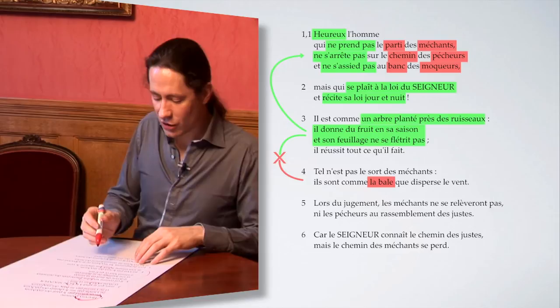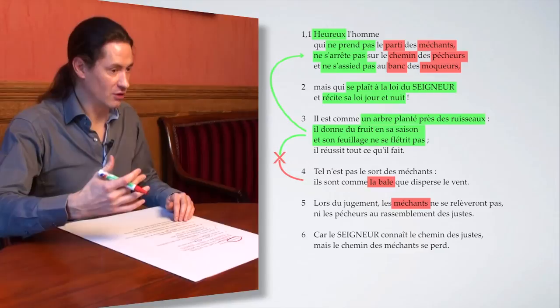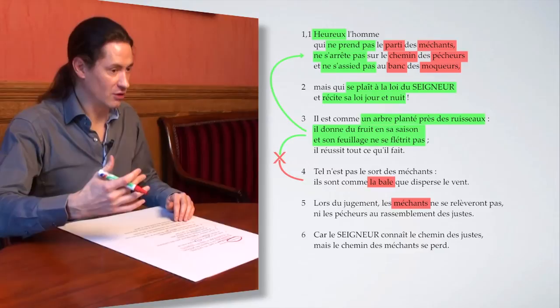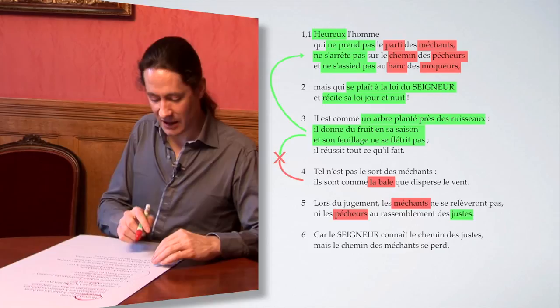Il s'agit là du sort réservé aux méchants et qui est explicité au verset 5. Tout comme la balle est séparée du grain de blé et emportée par le vent, de la même manière, les méchants et les pécheurs seront séparés des justes. Lors du jugement, les méchants ne se relèveront pas, ni les pécheurs au rassemblement des justes.